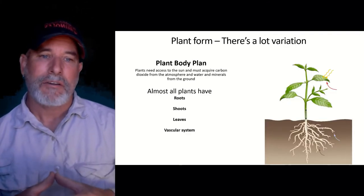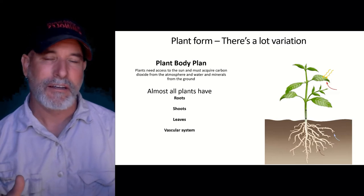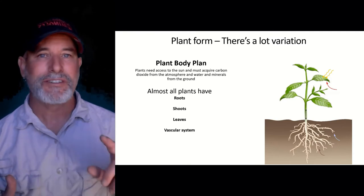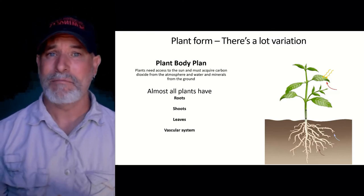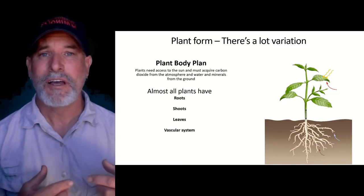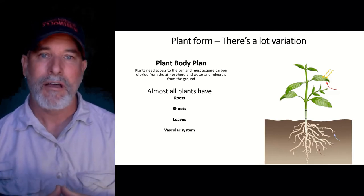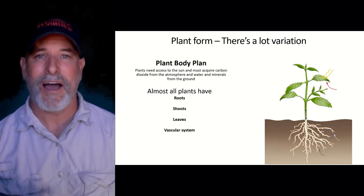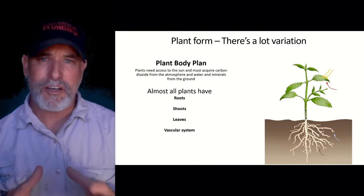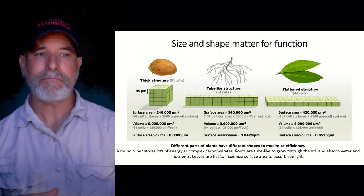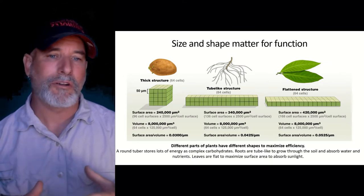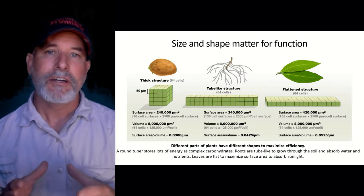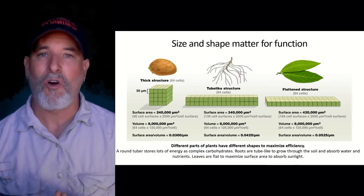So, plant body plan. Plants need access to sunlight and a way to absorb nutrients. So almost all plants have roots, shoots, leaves, and most have a vascular system connecting them together. The exception, of course, are the bryophytes, which do not have a vascular system — we call those non-vascular plants. Whether you're a root, a leaf, a stem, or some modified structure to store energy, size and shape really matter for form and function.